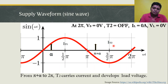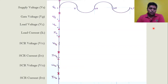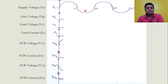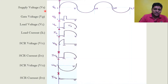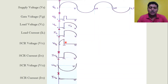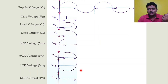Let's plot the output waveforms: supply voltage, gate voltage, load voltage, load current, voltage drop across both thyristors, and current through T1 and T2. In the positive half cycle, T1 is in forward bias (positive voltage across it) and T2 in reverse bias (negative voltage). Both SCRs are off initially — no load current, no load voltage. At alpha, the gate pulse is applied. T1 turns on, jumps to a lower potential state, and load current and load voltage are established in phase with the supply voltage.